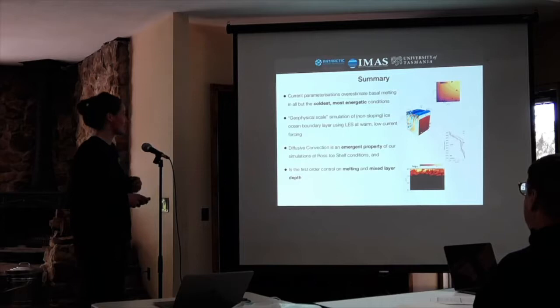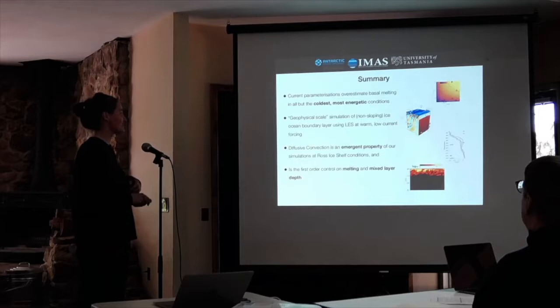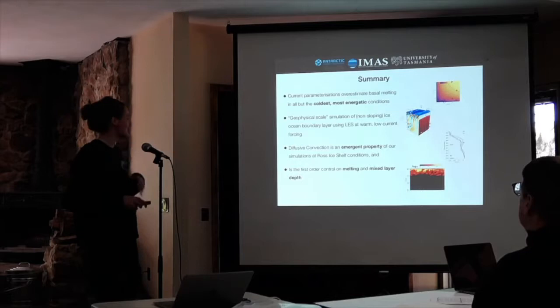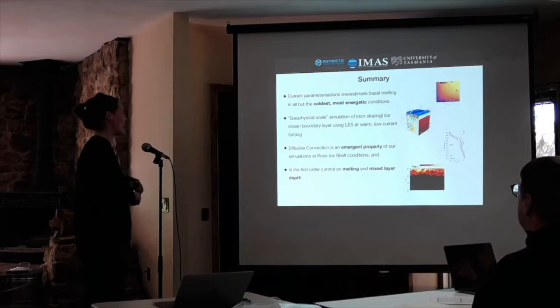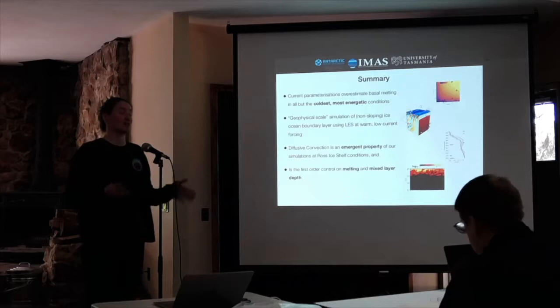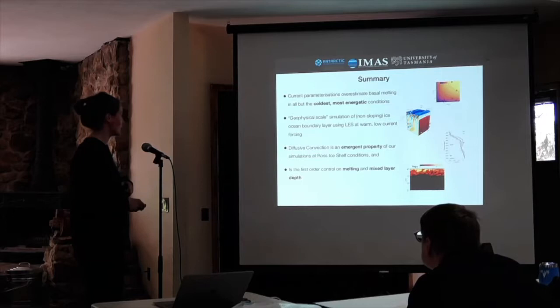To address this, we've been running what we call geophysical-scale large eddy simulations of flat ice shelves, at this stage focusing on low current forcing and relatively warm conditions. We find that diffusive convection is an emergent property of these simulations, which have been performed at conditions similar to the Ross Ice Shelf grounding zone. We suggest this mechanism is important at that location, and we find it is a first-order control on melting and mixed layer depth.